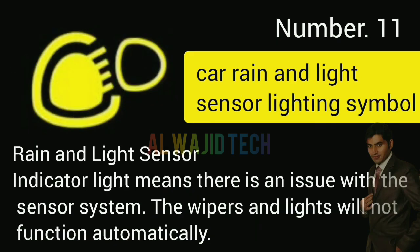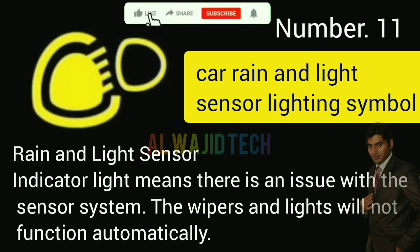Number eleven: Car rain and light sensor indicator means there is an issue with the sensor system. The wipers and lights will not function automatically.